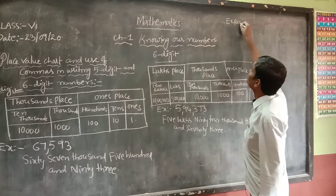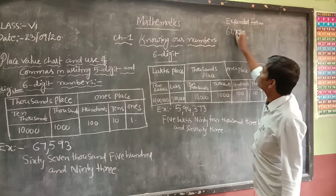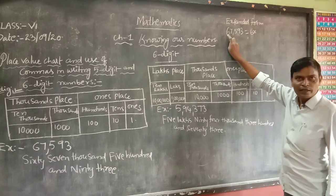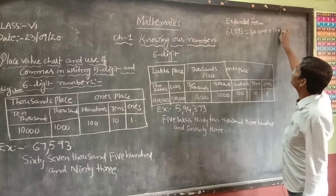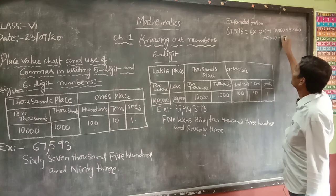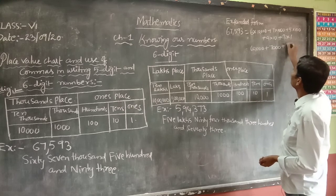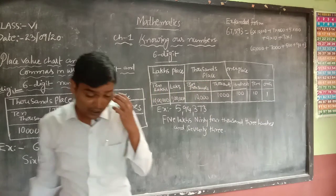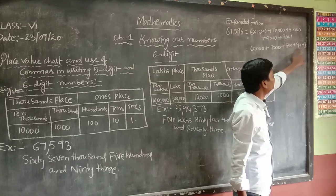Now let us see the expanded form. For example, 67,593. How can we write its expanded form? 6 is at the ten-thousands place, so 6 × 10,000; plus 7 × 1,000; plus 5 × 100; plus 9 × 10; plus 3 × 1. So the expanded form is: 60,000 + 7,000 + 500 + 90 + 3.